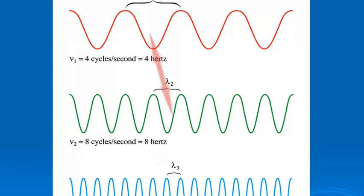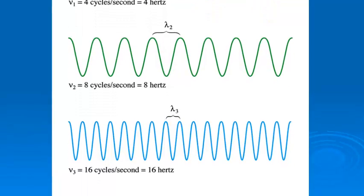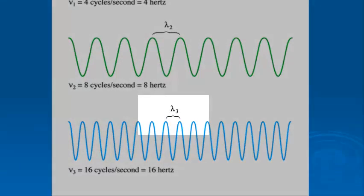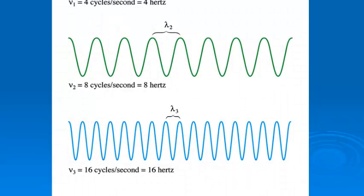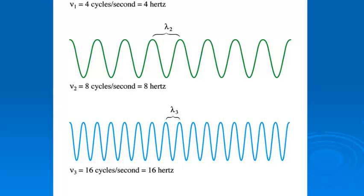If we double the frequency again to the blue wave at the bottom, we've got 16 cycles per second. Our wavelength gets even smaller. It's half of what it was in lambda two. So that's what we mean by inversely proportional. As wavelength gets smaller, frequency has to be getting faster.